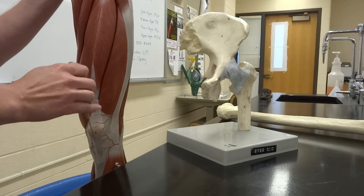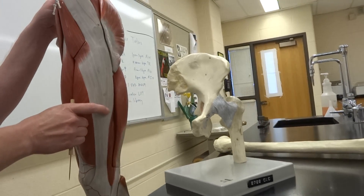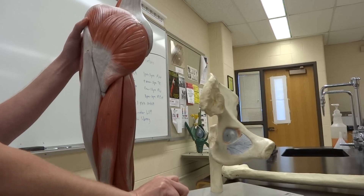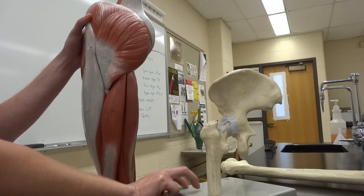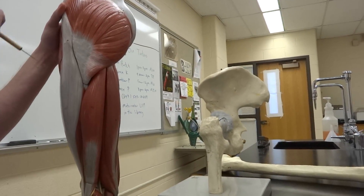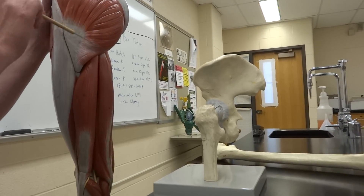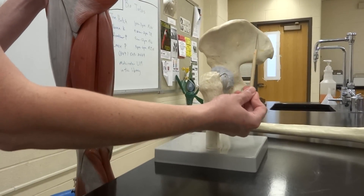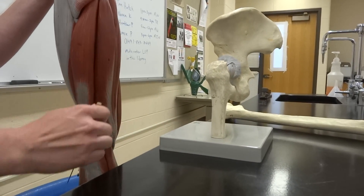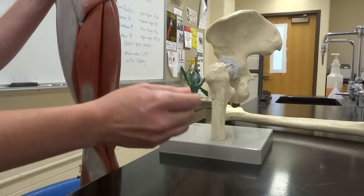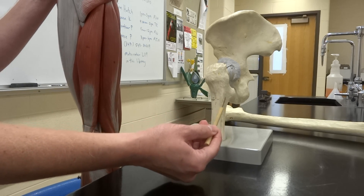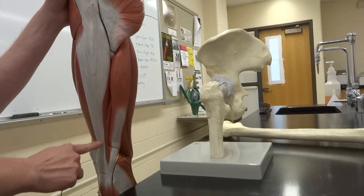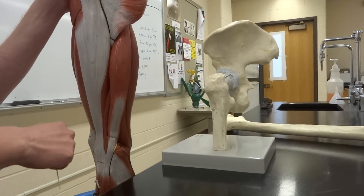Now we look at our gluteus maximus. The gluteus maximus is going to originate at the dorsal ilium — on the back side of our ilium along that iliac crest. It's also going to touch the sacrum and the coccyx. And it is going to insert at the gluteal tuberosity of the femur and the iliotibial tract, which is basically going to run down the lateral side of our entire leg all the way down to the tibia.